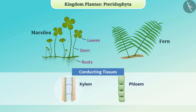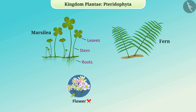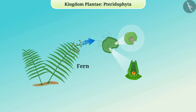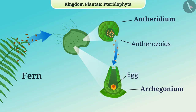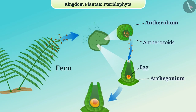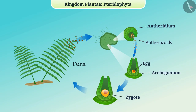Xylem tissue transports water while phloem tissue transports food and other substances from one part of the plant to another. They neither have flowers nor bear seeds. The gametophytes have male and female reproductive organs called anthridium and archegonium respectively. Antherozoids released from the anthridium reach the archegonium through water, and the egg fuses with the male gamete to produce a zygote which develops into a new individual.